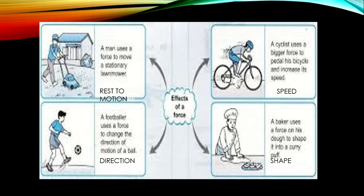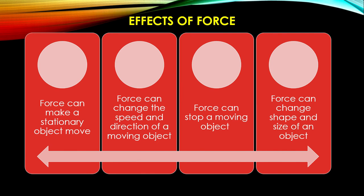You can see a combination of four pictures. In the first picture, the man is applying force and bringing the object from rest to motion. Similarly, we can bring an object from motion to rest — by application of force we can stop a moving object. In the second picture, a cyclist is increasing speed to move faster. In the third picture, a footballer kicks the ball and the direction of the ball is changed. In the last picture, a baker is kneading dough and the shape of the dough is changed. So the effects of force are: force can make a stationary object move, force can change the speed and direction of a moving object, force can stop a moving object, and force can change the shape and size of an object.